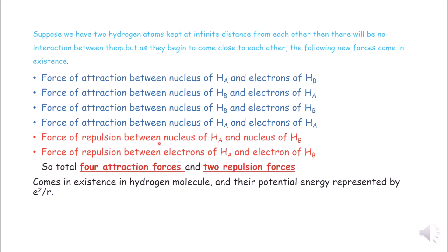Now repulsions: the force of repulsion between the nucleus of HA and the nucleus of HB — both nuclei are positive, so they repel each other. And the force of repulsion between the electrons of HA and the electrons of HB. In short, when H2 Molecule forms, four types of attractions and two repulsions exist, and their potential energy is represented as e² over R.